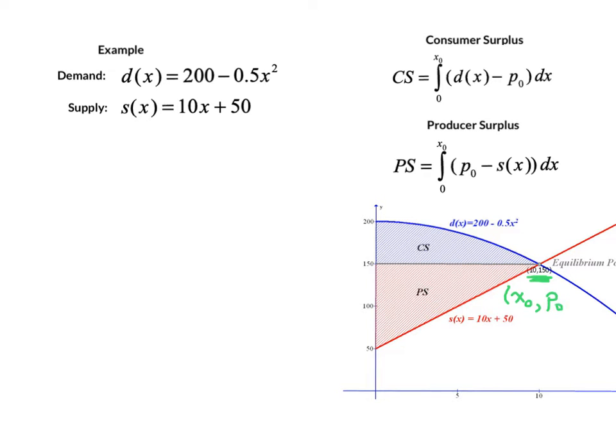This determines 10 units sold per unit of time at a market price of $150. So we have the two functions that intersect, and then we graph a third function which is the horizontal line at the market price, p₀. We've graphed this third function p₀ = 150. What that does is it divides the region up into two parts.